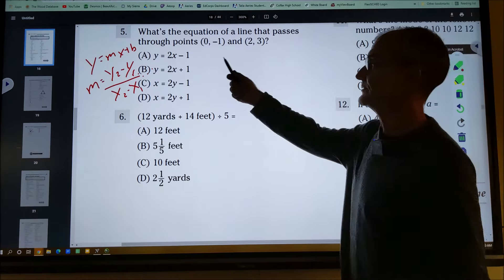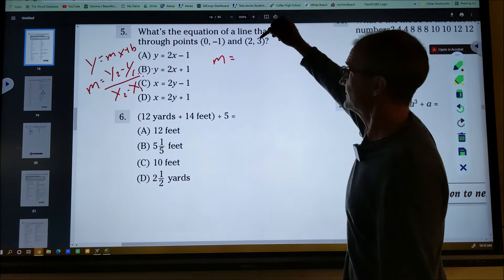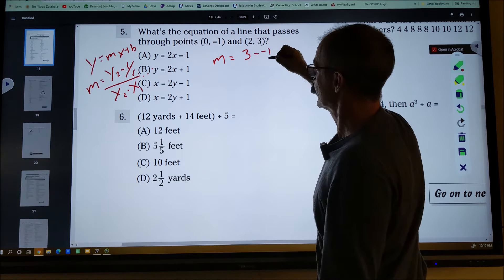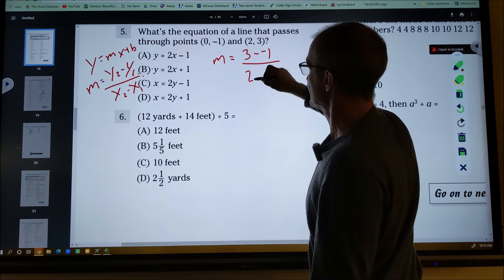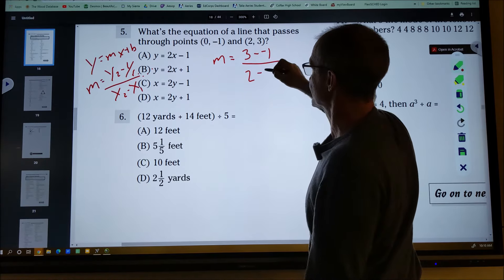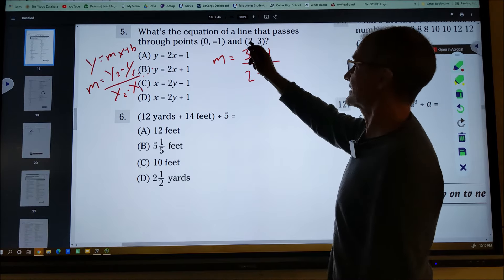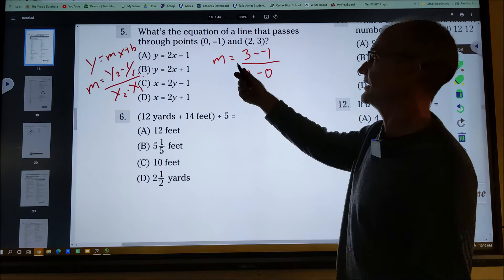So I'm going to use these two points to find my slope first. My slope is going to be y2, 3 minus y1 divided by x2, which is 2 minus x1. So I'm calling this my first point, x1, y1. My second point, x2, y2. x always comes before y in the ordered pair.